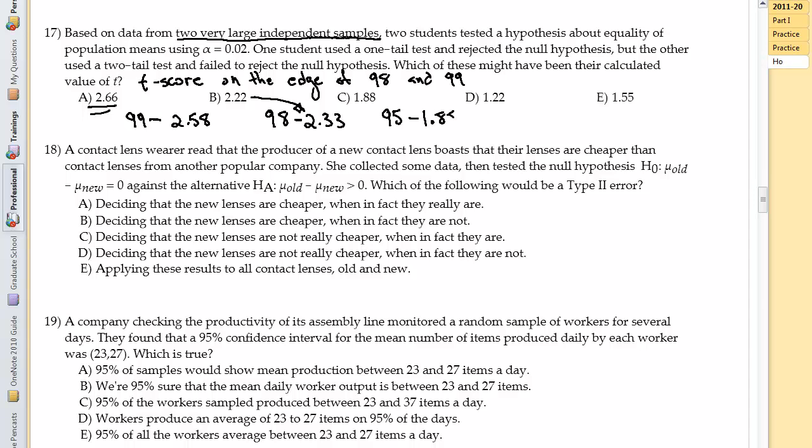Now you've got t-scores that are 1.96. And so 1.88, 1.22, 1.55, these guys are all going to be less than 95. These guys are all going to be really close to the center. Nobody's going to reject these values.